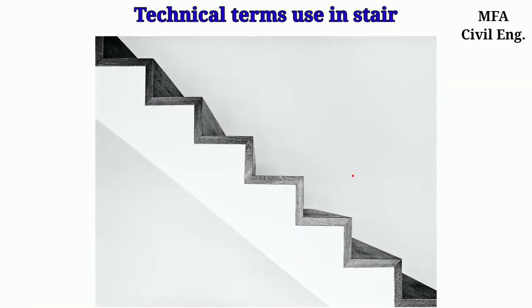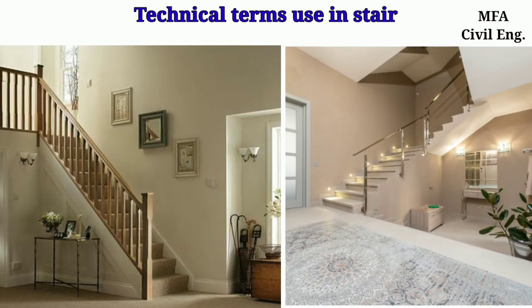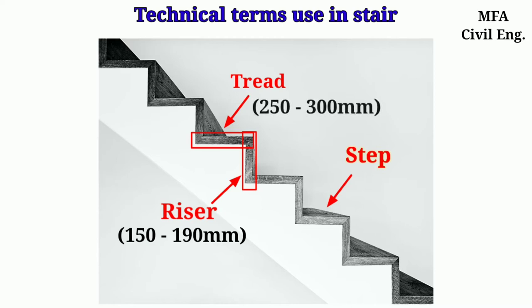Each step of the stair consists of one horizontal and one vertical portion. The horizontal portion is called the tread and the vertical portion is called the riser. For residential and commercial buildings, the height of the riser is considered between 150 mm to 190 mm, and the width of the tread is considered between 250 mm to 300 mm.